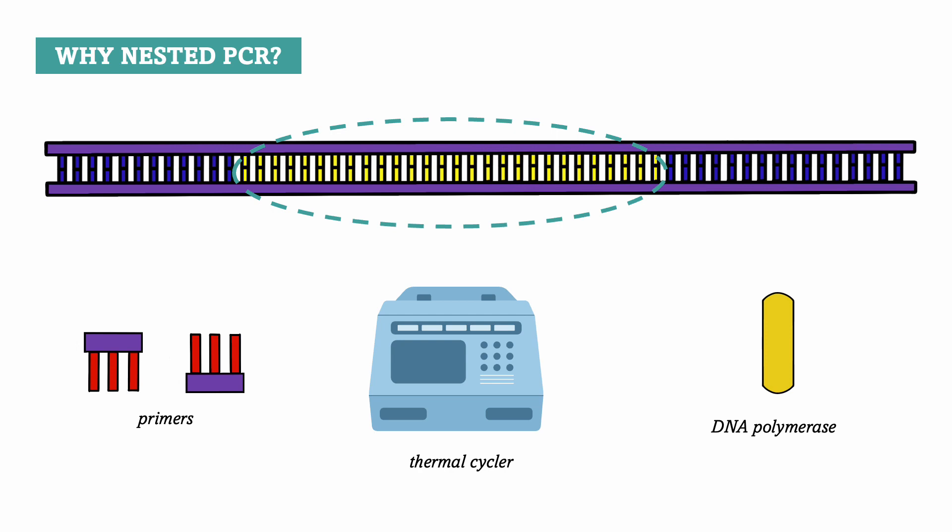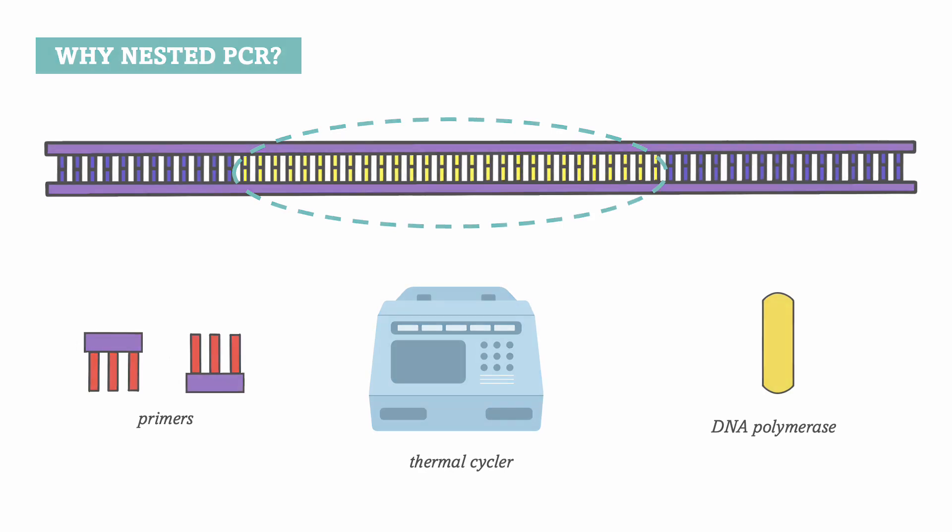So the whole point of nested PCR is to allow us to be much more specific, and the key to getting a specific product is to use two sets of primers. Let's take a look and see how this works in more detail.